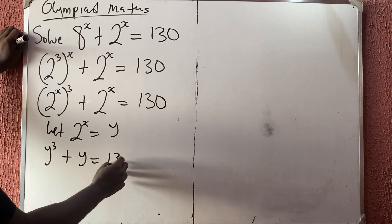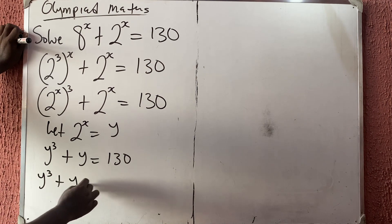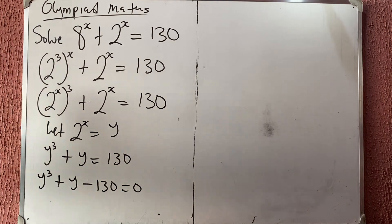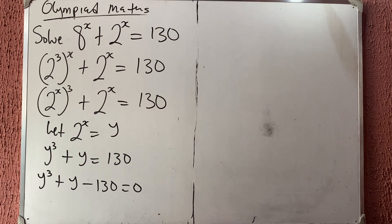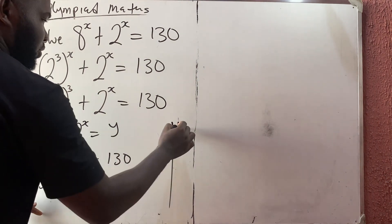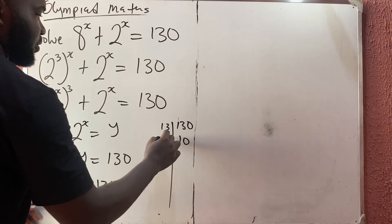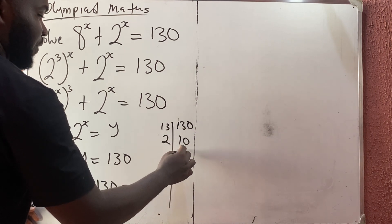Substituting y, I get y raised to power 3 plus y equals 1/3, which gives y cubed plus y minus 1/3 equals 0. This is a cubic equation, so we can find a factor by trial and error.